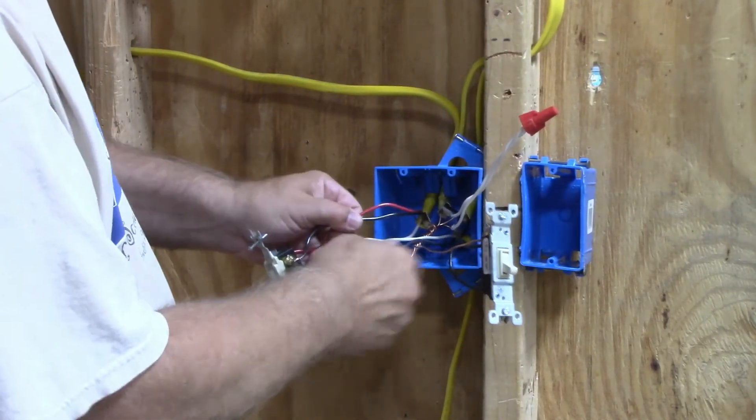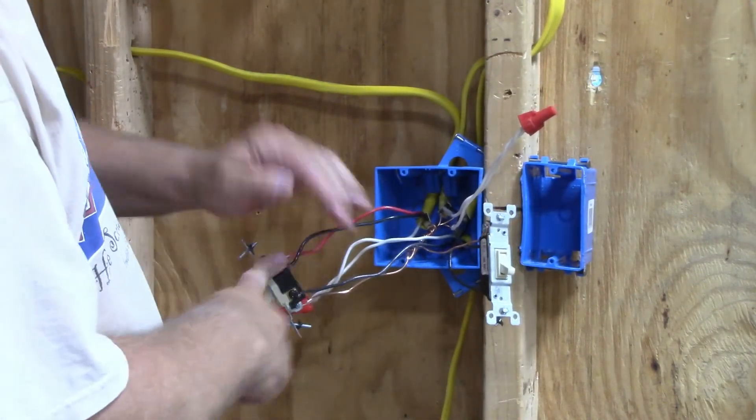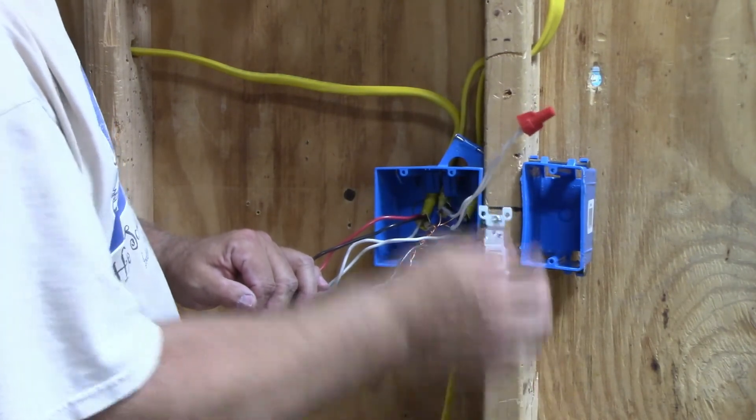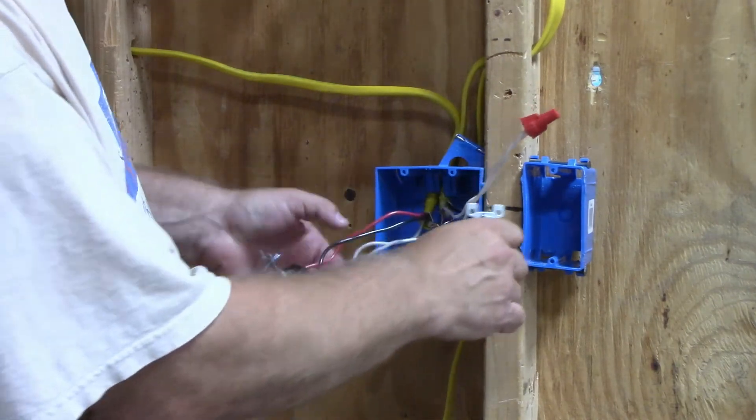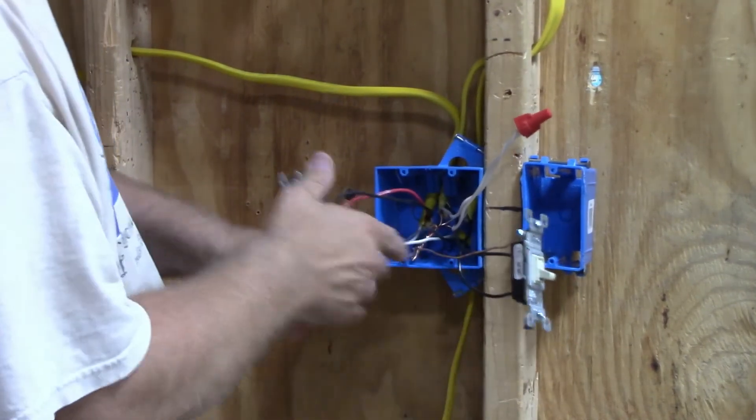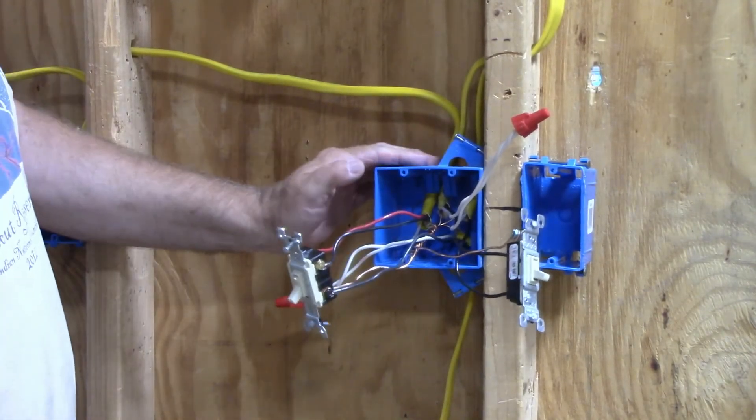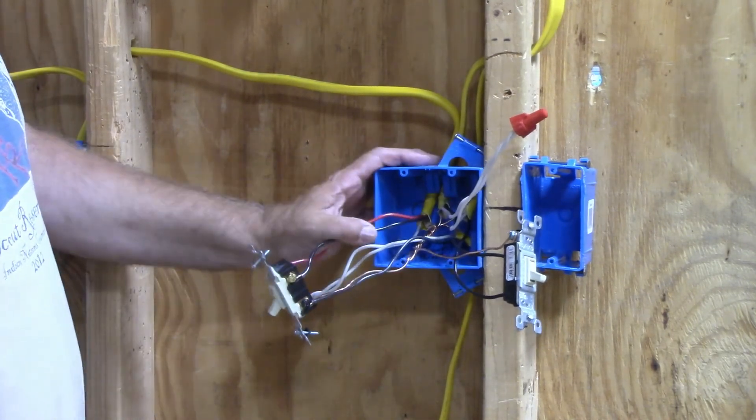That leaves me with a hot wire that goes to the black, the travelers go across from each other, and then on the single pole switch you have the hot wire and the switch leg. It doesn't matter whether they go on top or bottom because they're all the same. They'll work either way. That is a two-gang box, single pole switch, three-way switch on separate circuits.